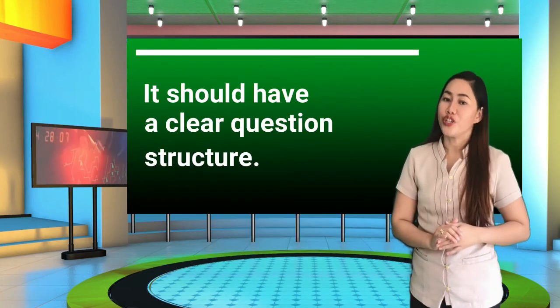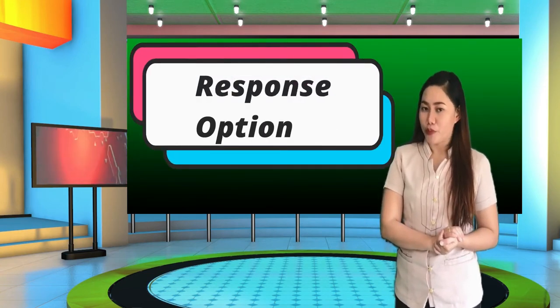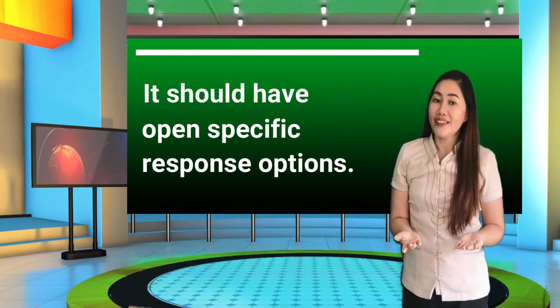Now let's proceed to tip number six: the questionnaire should have a clear question structure. It should follow three parts — the question stem, additional instructions, and response options — so that the respondents will not be confused. For example, the question is: 'What gadgets do you have at home? Check those that apply.' Then you give the options. Tip number seven: it should have open, specific response options. The survey should provide specific options to choose from so that respondents will not be confused. For example, options are cell phone, tablet, and desktop.